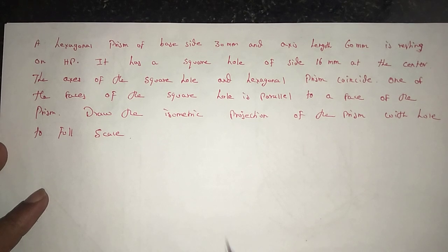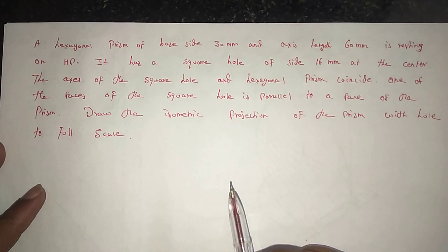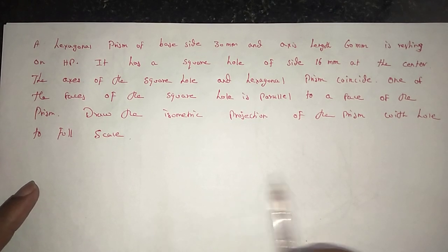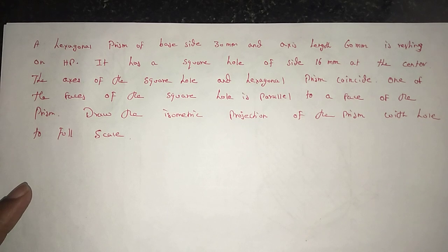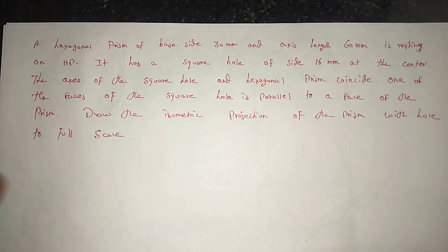The problem is a hexagonal prism with base height 30mm and height 60mm. The hexagonal prism has a square hole, and the size of the square hole is 16mm.